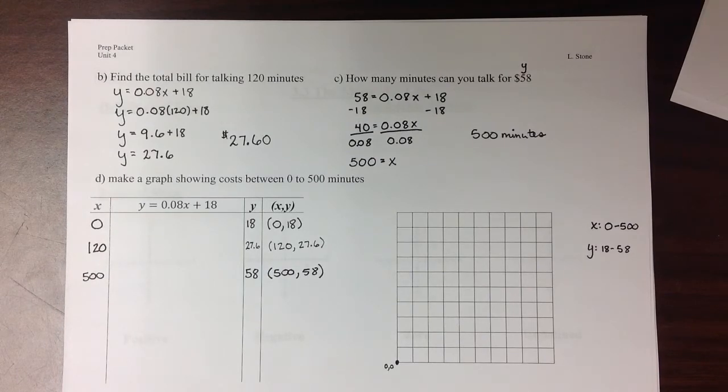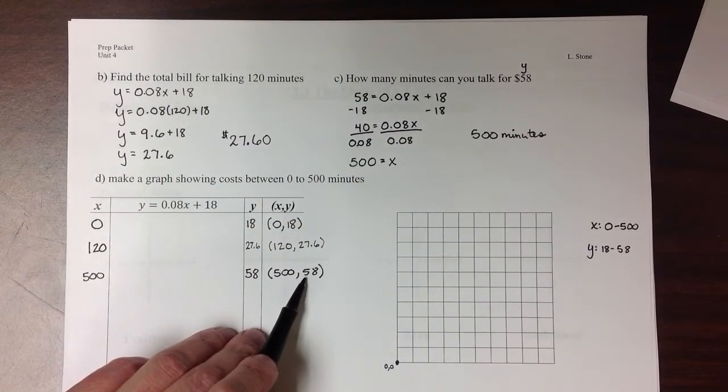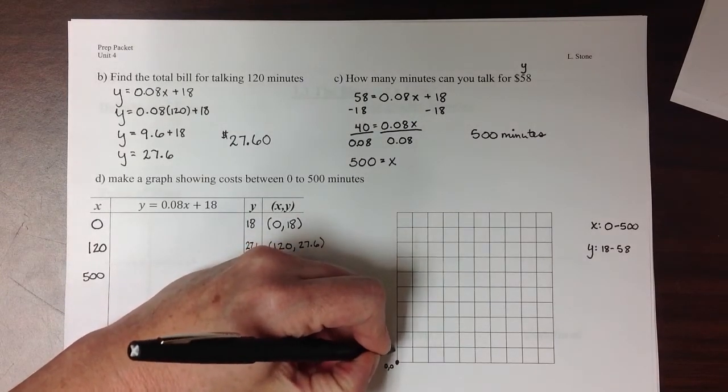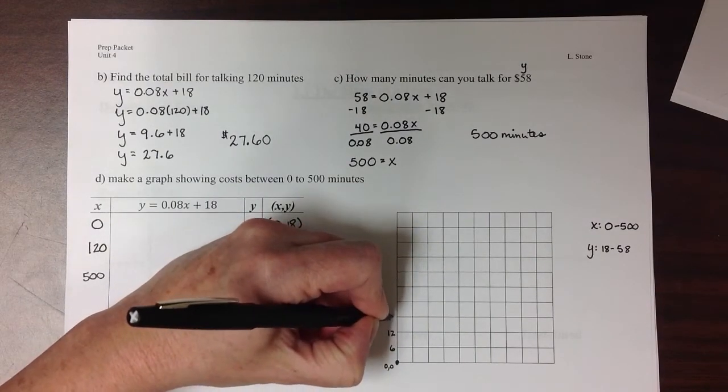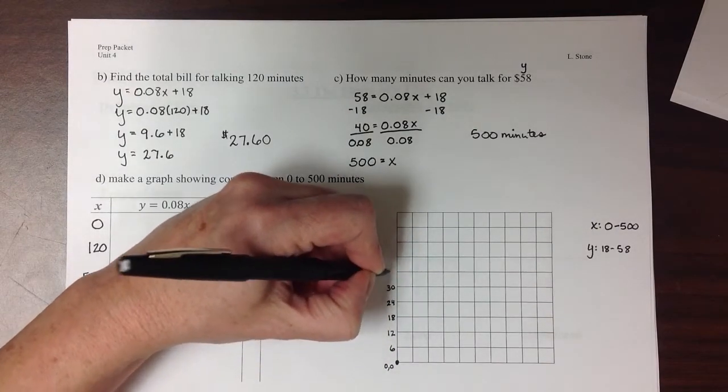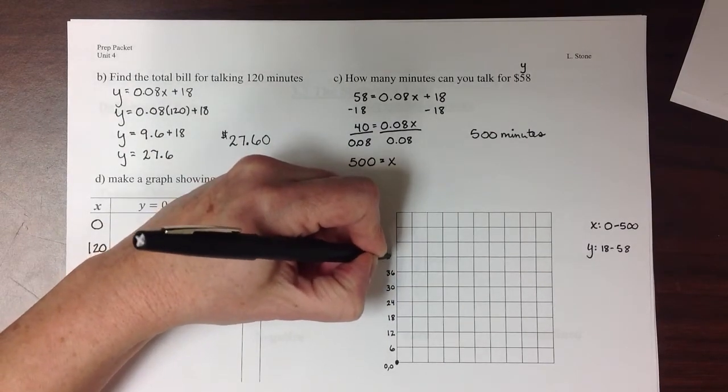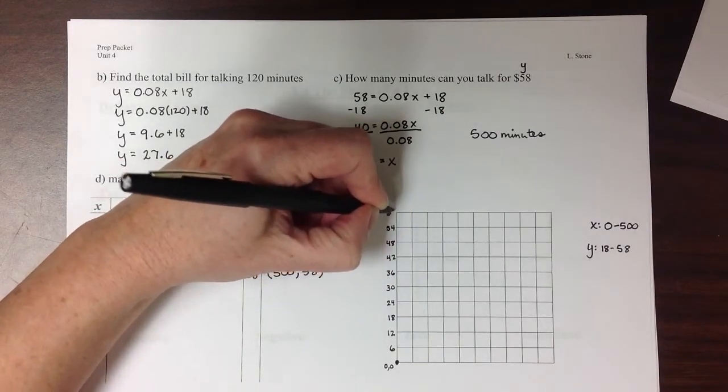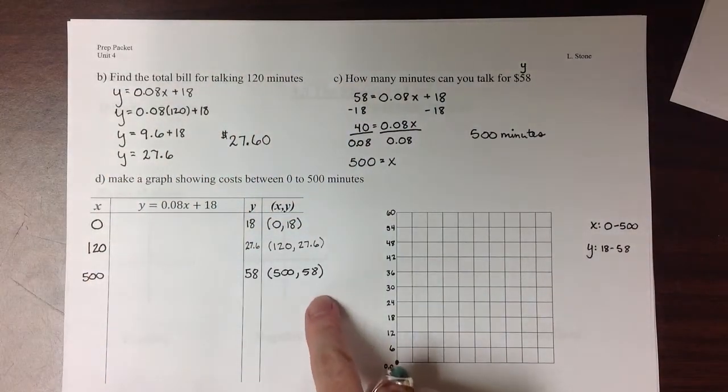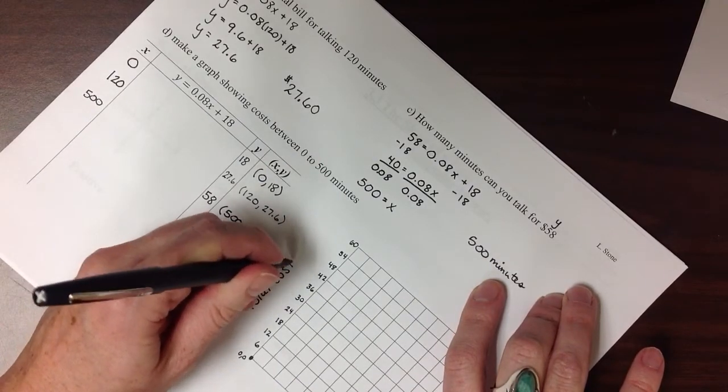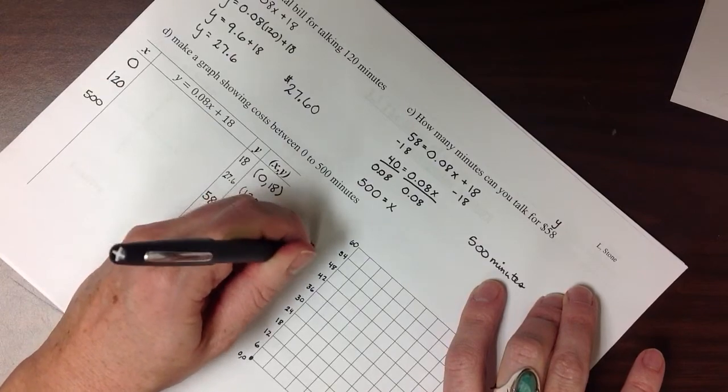And then I'm going to count by, I think, 5s going up, although I may not be able to get the 58 on. So maybe I should count by 6s coming up here. So if I let this be 6, 12, 18, 24, 30, 36, 42, 48, 54, 60. That is my y values, which represent total cost, and it's being measured in dollars.